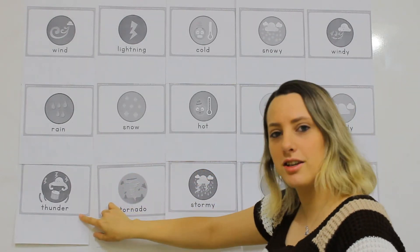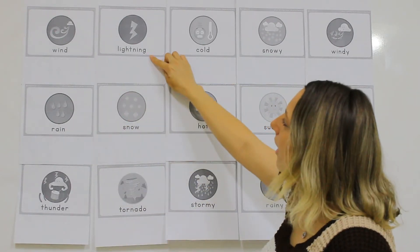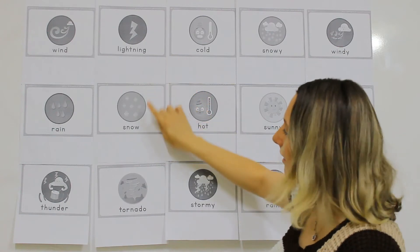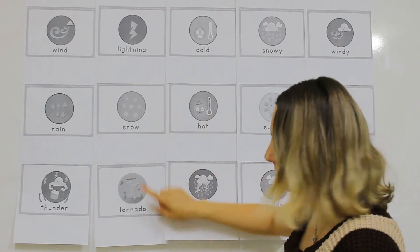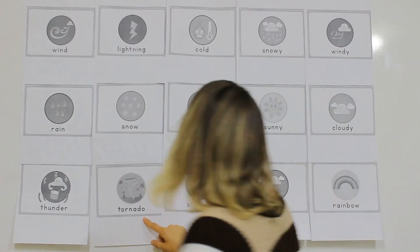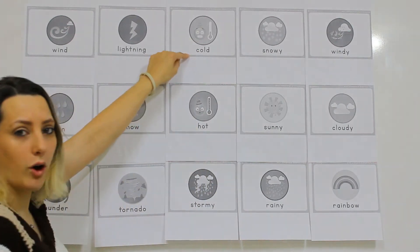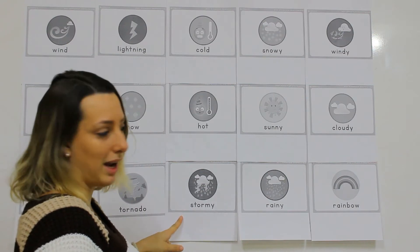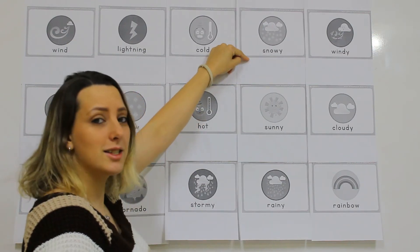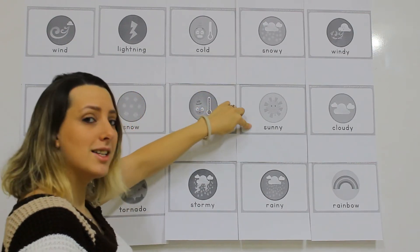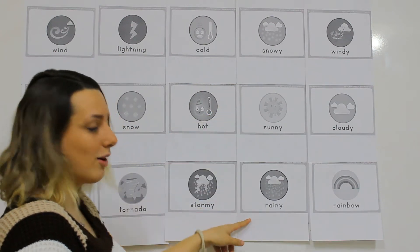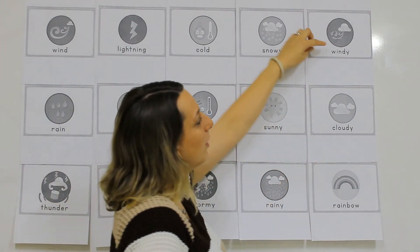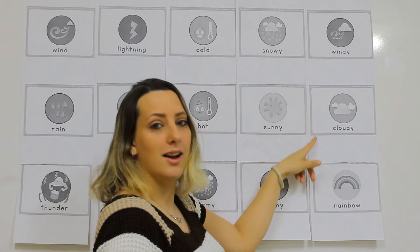Wind, rain, thunder, lightning, snow, tornado, cold, hot, stormy, snowy, sunny, rainy, windy, cloudy, and a rainbow.